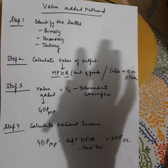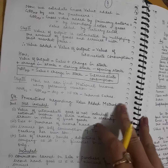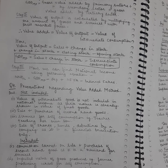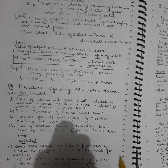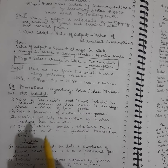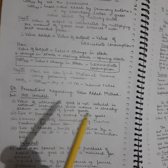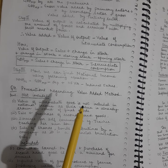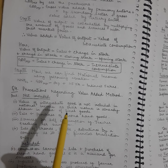Moving on to the next question: precautions regarding the value-added method. What are the various precautions we have to take while using this method? Number one — the value of intermediate goods is not included. This relates to the problem of double counting, which I'll explain in a separate question.